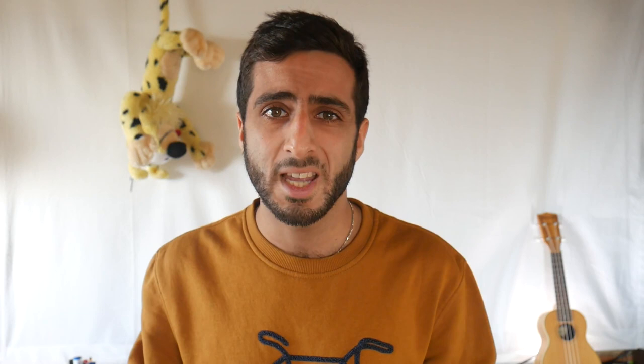Donc si on répète ça avec tous les miroirs les uns après les autres, cela nous permet de reconstruire l'image pixel par pixel. Mais pour vous donner une idée, une image 256 pixels par 256 pixels — une résolution pas terrible — ça vous donne 65 536 pixels. Donc autant vous dire qu'avec cette technique, ça risque de prendre du temps.